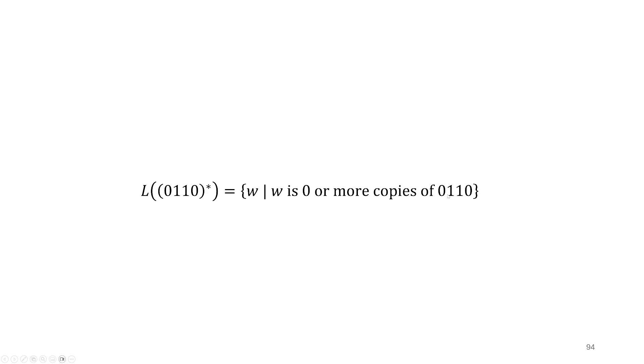And then we might have one copy, just this substring 0, 1, 1, 0, or maybe two 0, 1, 1, 0, 0, 1, 1, 0, and indeed continuing for any number of copies we might want.